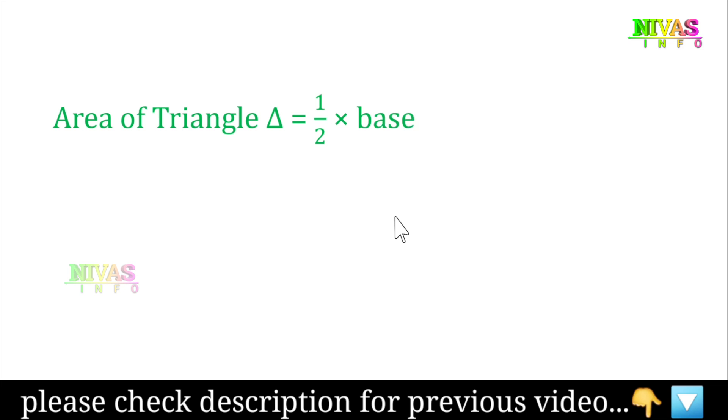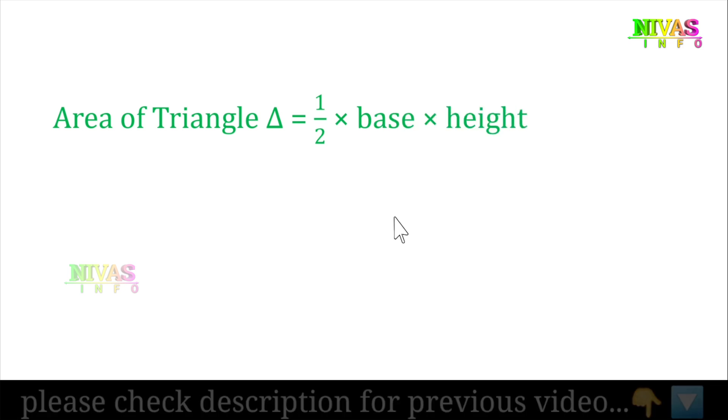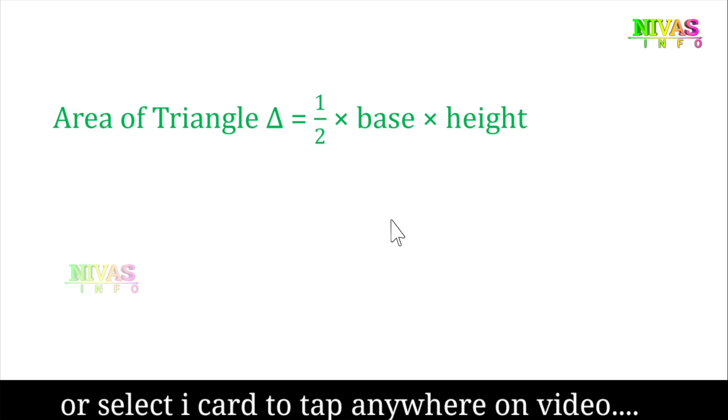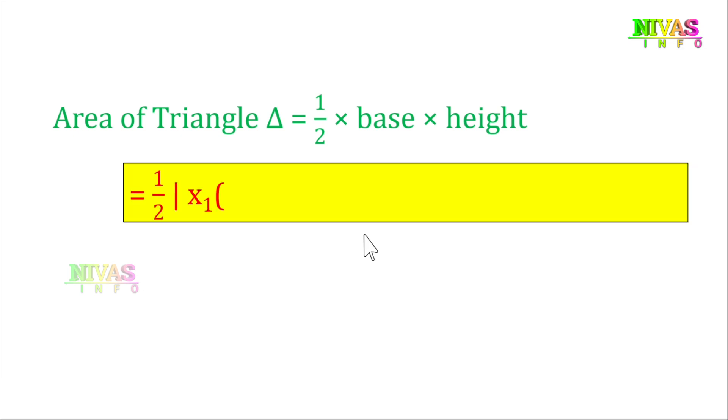We find the area of a triangle from the common formula: one-half times base times height. So base height also we can find out. We have another good way to use the formula which is derived, and the formula is easy to use.